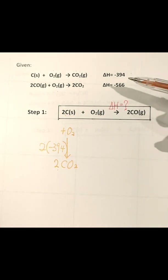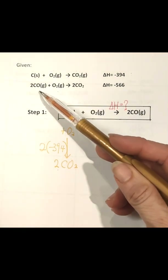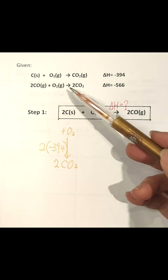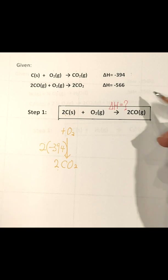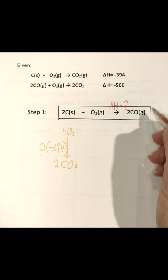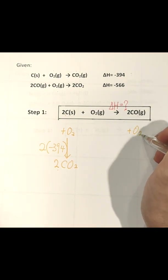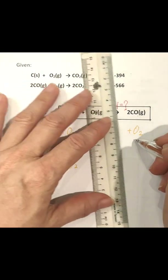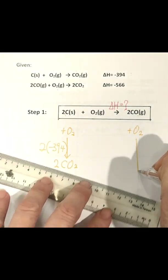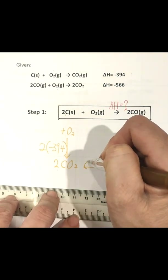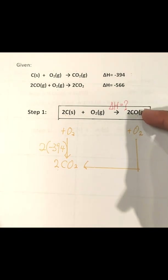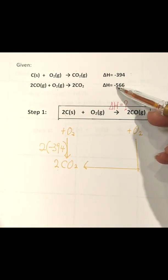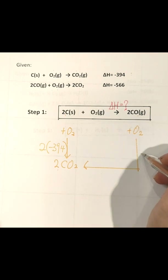Next, we look at the second data given: 2 carbon monoxide reacts with oxygen to give 2 carbon dioxide. We go back to the question — 2 carbon monoxide reacts with oxygen to give 2 carbon dioxide, so for this enthalpy change the value should be −566 kJ/mol.